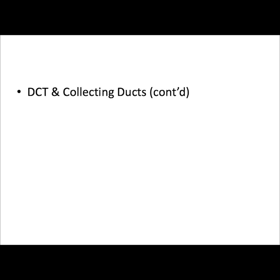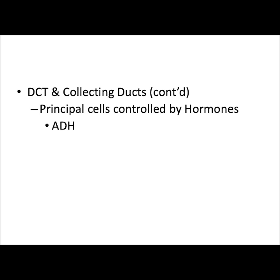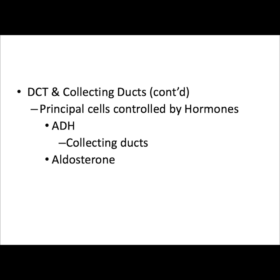Principal cells with receptors for ADH (anti-diuretic hormone) are located within the collecting ducts. When ADH binds to these receptors, it triggers the cells to place aquaporins on their membrane, allowing water to move across by osmosis. Principal cells with receptors for aldosterone are located within the distal convoluted tubule and collecting ducts. In response to aldosterone, these cells place protein carriers for sodium and potassium — sodium is reabsorbed and potassium is secreted.